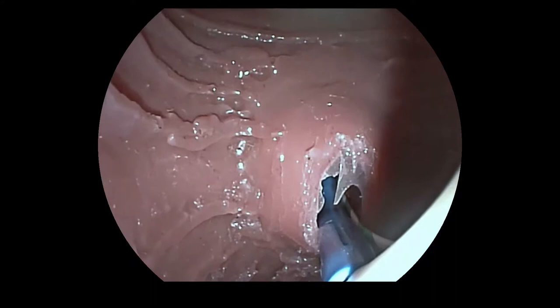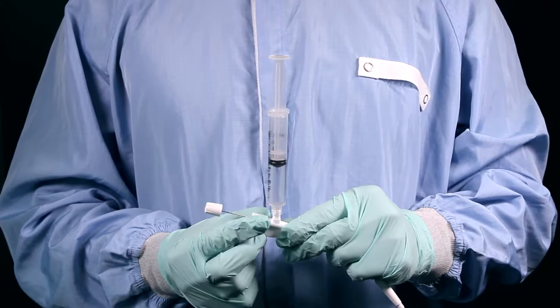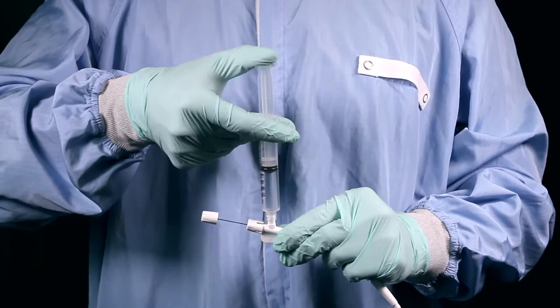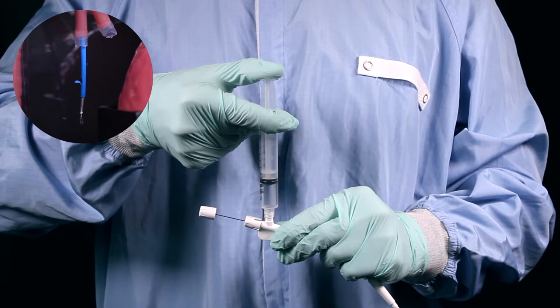To inject contrast medium, fix the syringe to the luer lock adapter and then close the screw cap attached to the guide catheter. Using this method, the injection of a contrast medium is possible even with the guide wire in place.